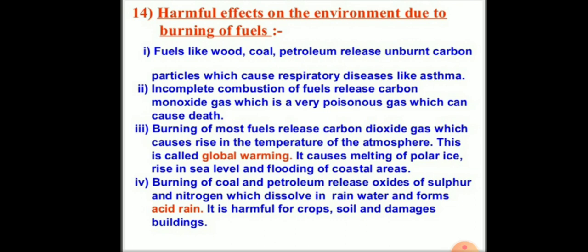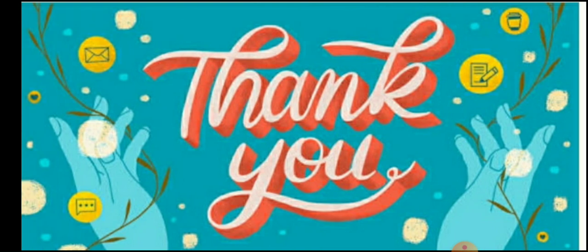Burning of coal and petroleum releases oxides of sulfur and nitrogen, which dissolve in rainwater and form acid rain. Acid rain is harmful for crops, soil, and damages buildings. That concludes all the harmful effects on the environment due to burning of fuels, and this chapter is now complete. I hope you all have understood. Thank you.